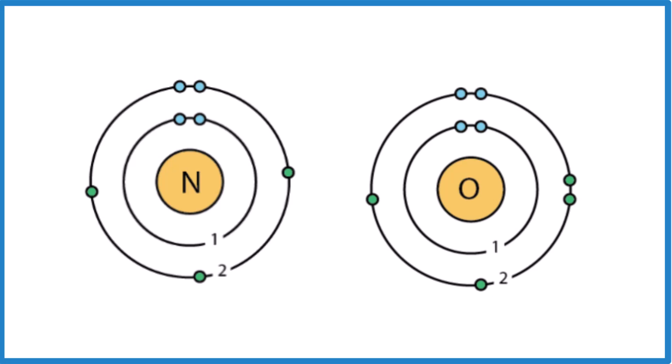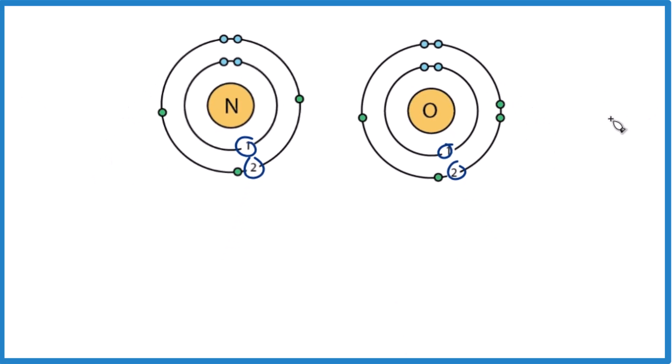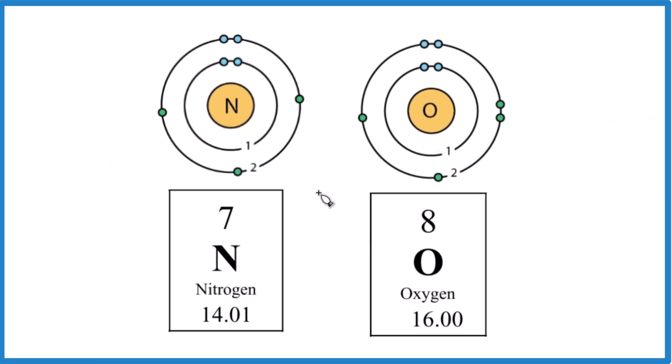The next trend is as we go across a period. On the periodic table, going across, we have nitrogen, then oxygen, then fluorine. Oxygen's more electronegative, it's closer to fluorine. Here's the reason. We have the same number of energy levels or shells, so that doesn't matter when we go across the period.